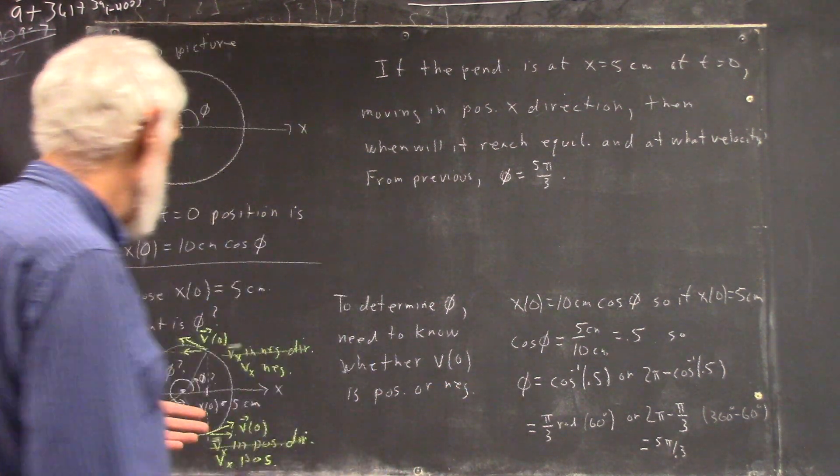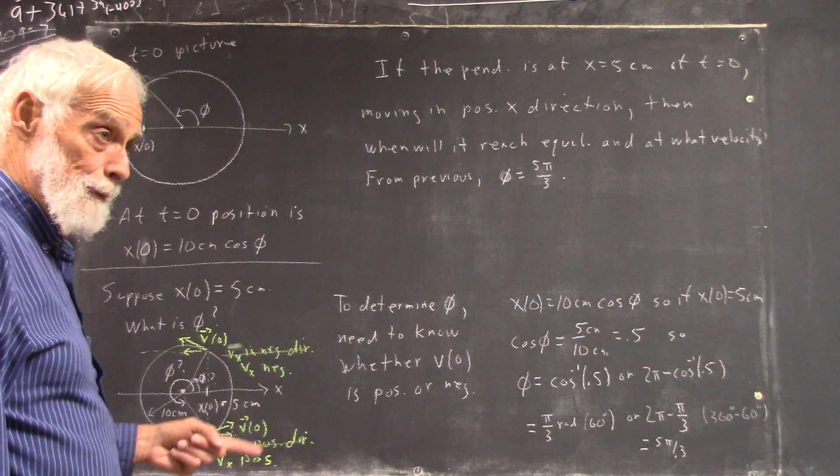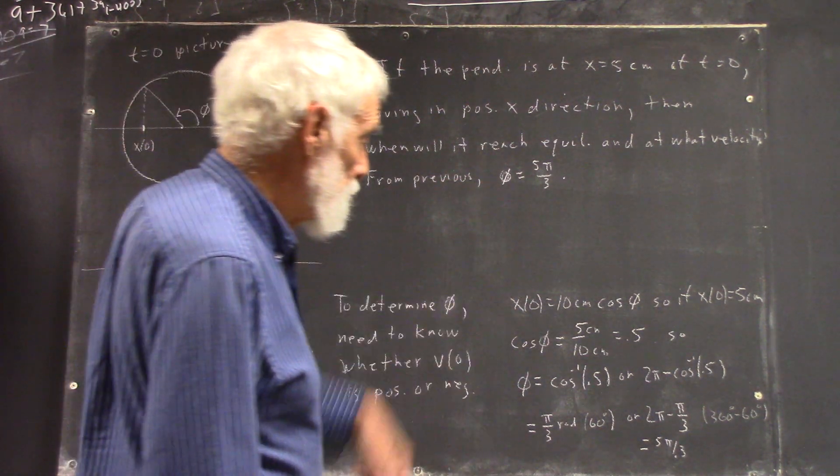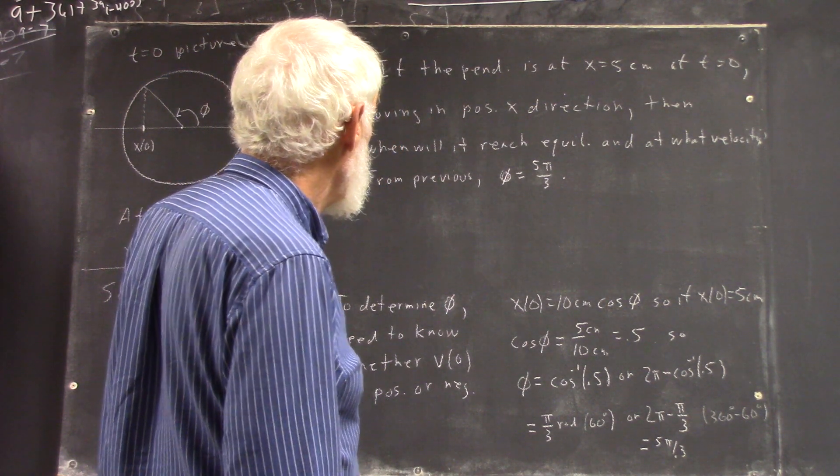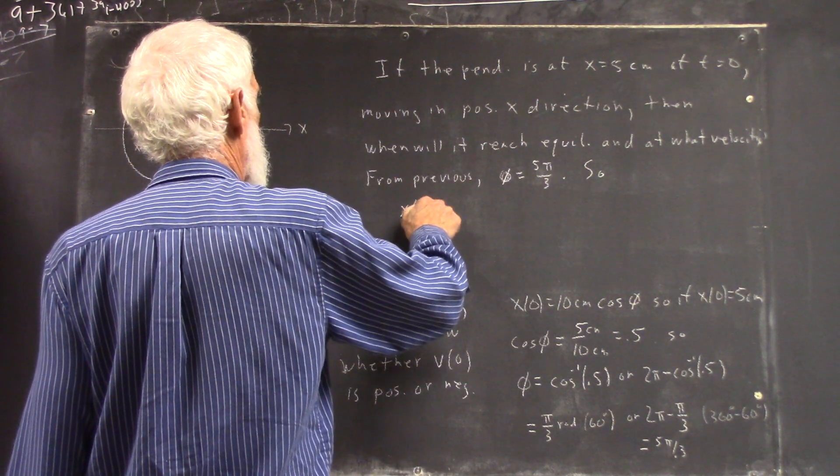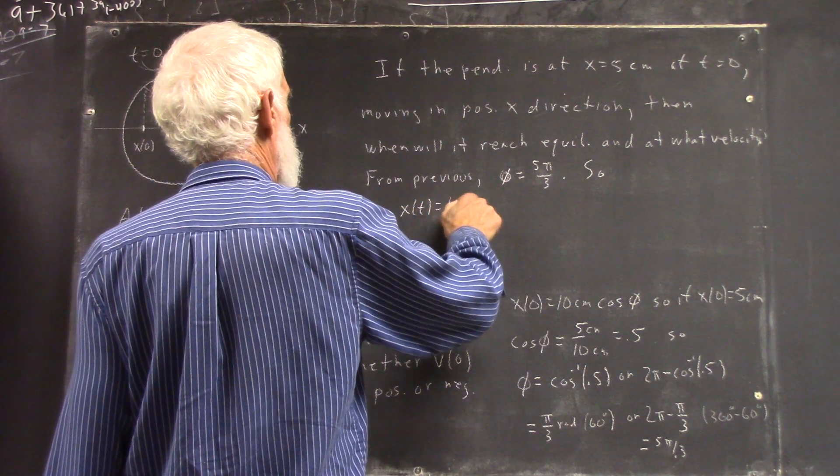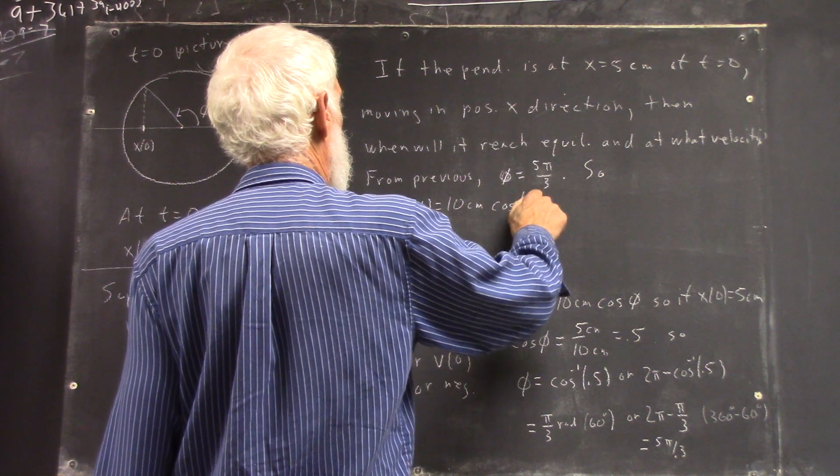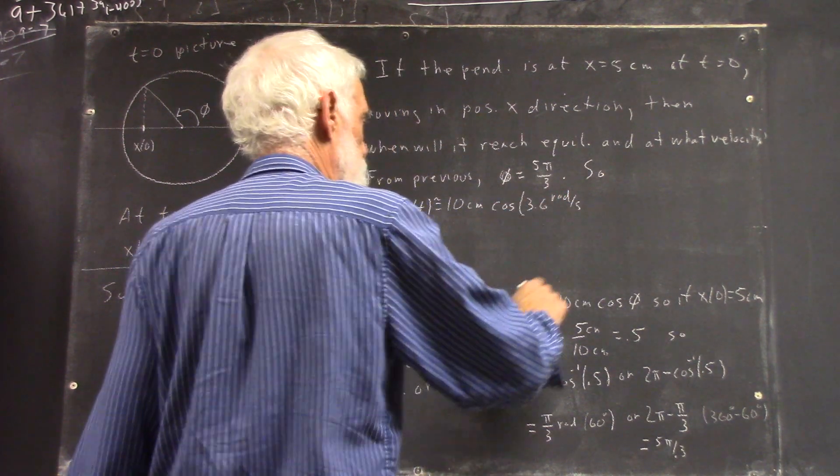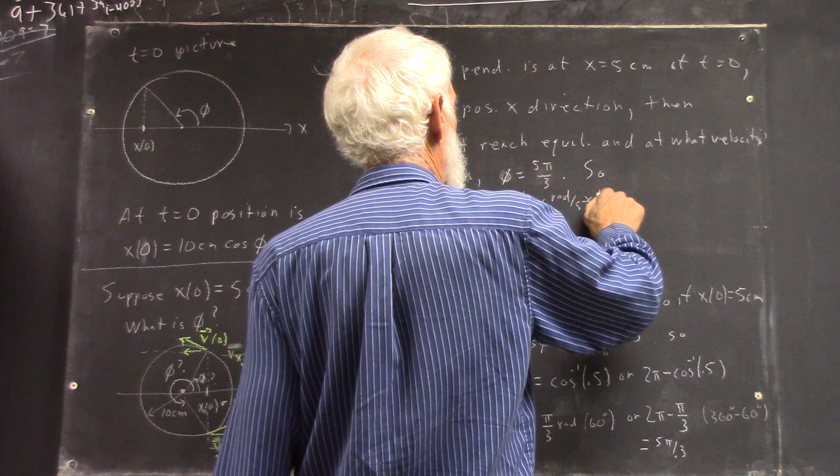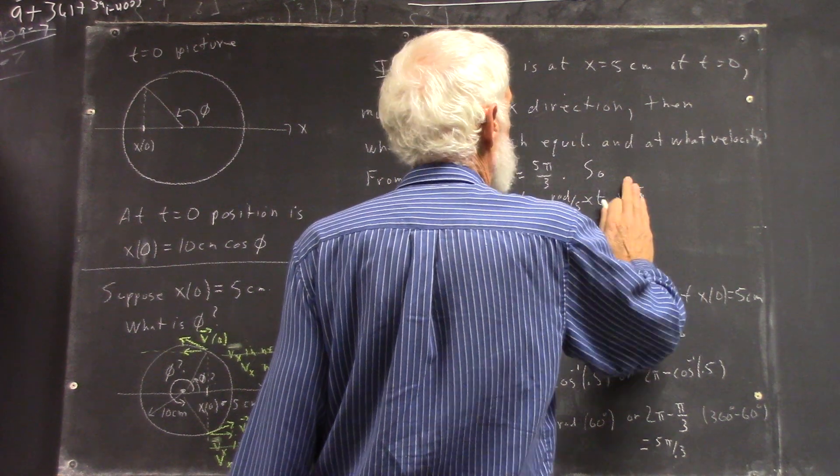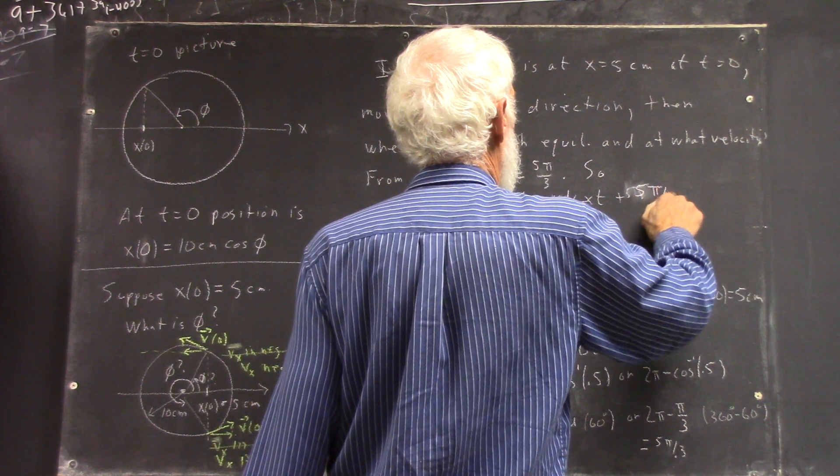It's this one because you're moving in the positive direction at t equals zero. If you're moving in the negative direction, of course, it would be just pi over three. So we know that x of t equals ten centimeters times the cosine of 3.6 radians per second times t plus five pi over three.